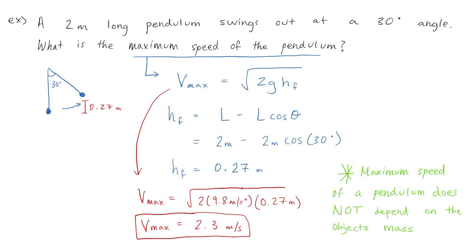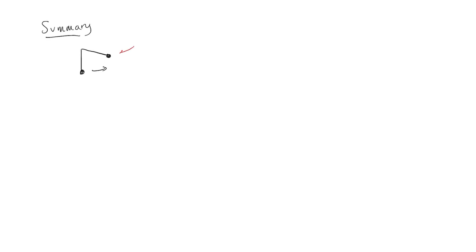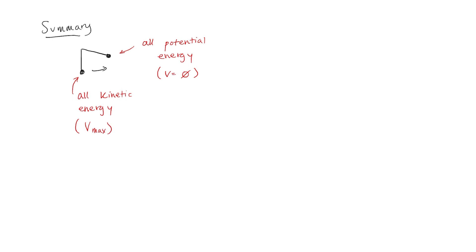One important thing to notice is that the maximum speed of a pendulum does not depend on the object's mass. It only depends on the acceleration due to gravity and the height the pendulum reaches. To summarize: at the maximum point, the pendulum only has potential energy and has no speed. When it swings back to the minimum point, all of that potential energy is converted to kinetic energy and the pendulum moves with its maximum speed. Using conservation of energy, the maximum speed is calculated as the square root of 2gh_f, where h_f is the maximum height the pendulum reaches.